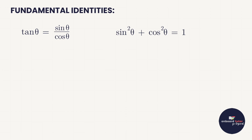There are also things that are fundamentally true about trigonometry called fundamental identities. Tan θ is always equal to sin θ over cos θ, which really helps us prove or simplify identities. The other identity is sin²θ + cos²θ = 1. Variations include sin²θ = 1 − cos²θ, and cos²θ = 1 − sin²θ — all very helpful adaptations to know.